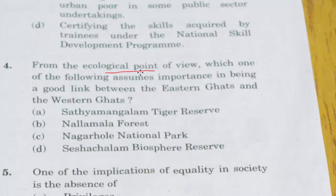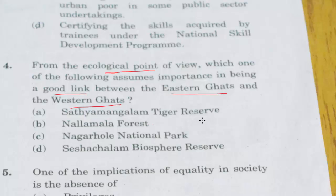In this question, we are looking for that spot which acts like a good link between the Eastern Ghats and the Western Ghats. Before we explore the options, we need to think: if Eastern and Western Ghats have to come to a point where they are linked, it has to be somewhere in the lower portion of the Indian subcontinent — in Kerala, Tamil Nadu, and a little bit of Karnataka, because in that spot we have the Nilgiris. Now, Nalamala Forest exists in Andhra Pradesh, which is far from the Western Ghats, so we strike it out.